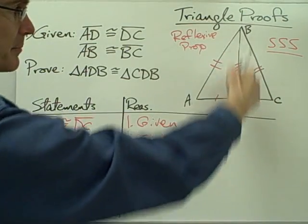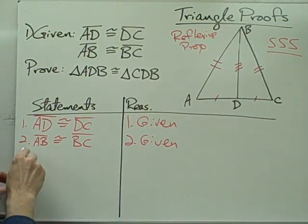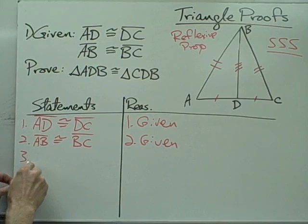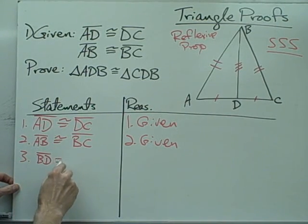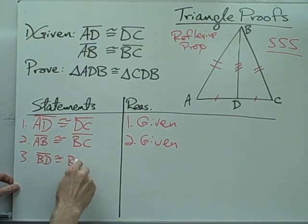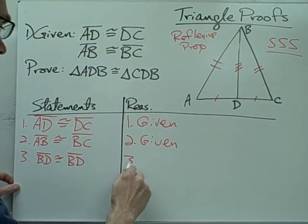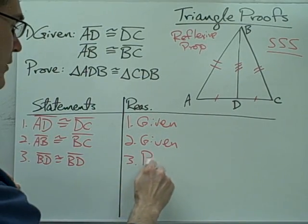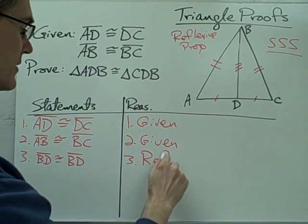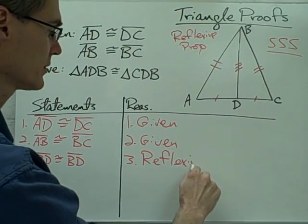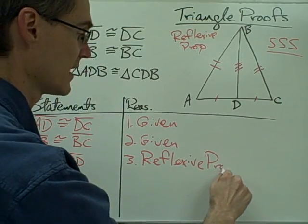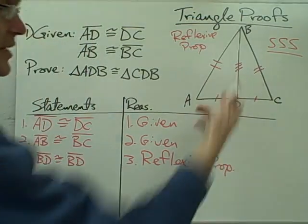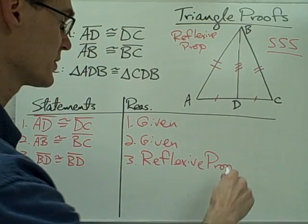I've got that segment BD is congruent to itself, so let me put that one down here. Segment BD is congruent to segment BD, and the reason for that is the reflexive property of congruence, which just says that all segments are congruent to themselves.